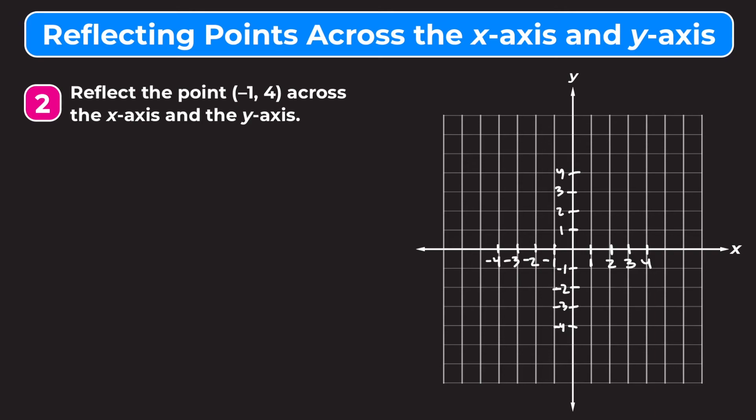Now let's start by plotting our given point. We have the point (−1, 4), so we go to negative 1 on the x-axis and 4 up on the y-axis and we get this point right here. Now let's reflect across the x-axis first.